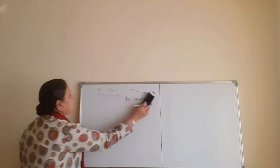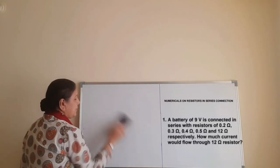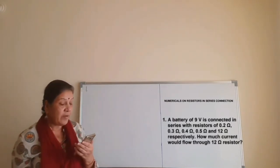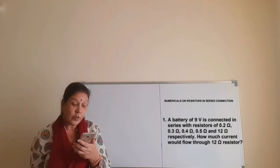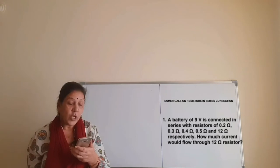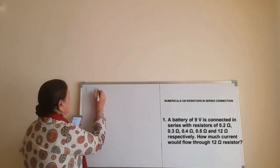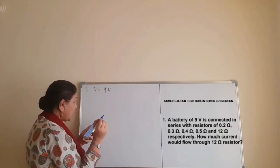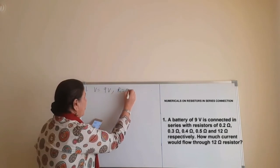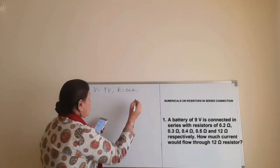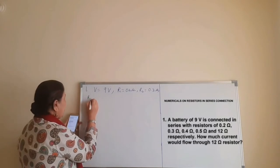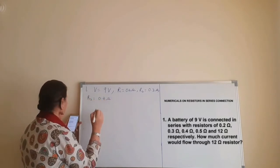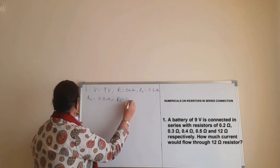So let's start. The very first question: a battery of 9 volts is connected in series with resistors of 0.2 ohm, 0.3 ohm, 0.4 ohm, 0.5 ohm, and 12 ohm respectively. How much current would flow through the 12 ohm resistor? The potential difference V is given as 9 volts, and R1 = 0.2 Ω, R2 = 0.3 Ω, R3 = 0.4 Ω, R4 = 0.5 Ω, R5 = 12 Ω.